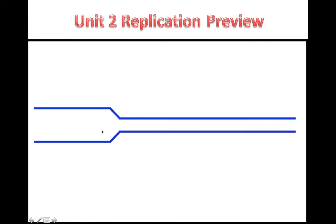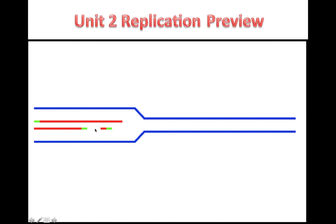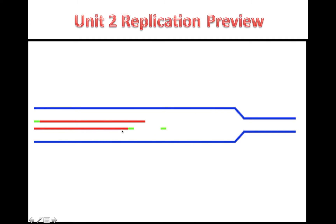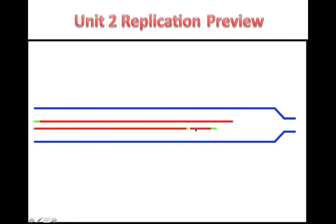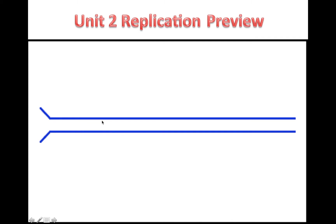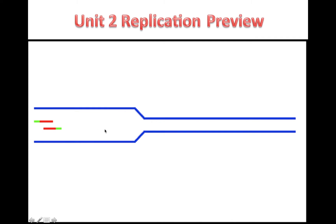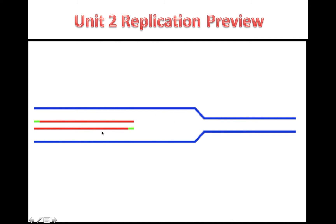The bottom strand, however, is synthesized in short, discrete fragments that are ligated together. Both strands of DNA are replicated in a 5 prime to 3 prime direction, but remember that the strands of DNA are anti-parallel.